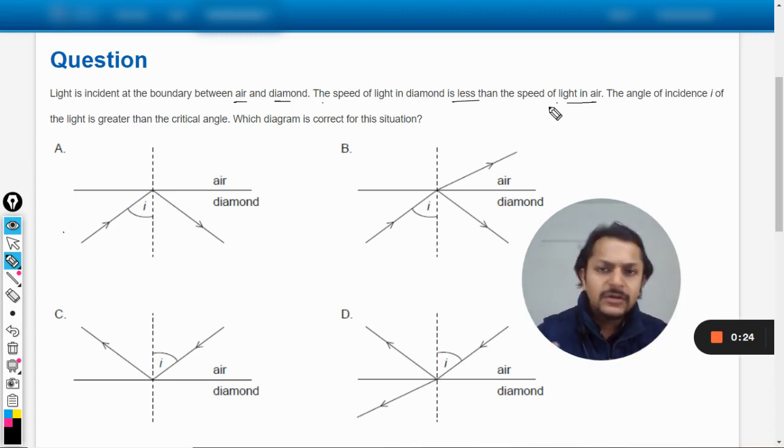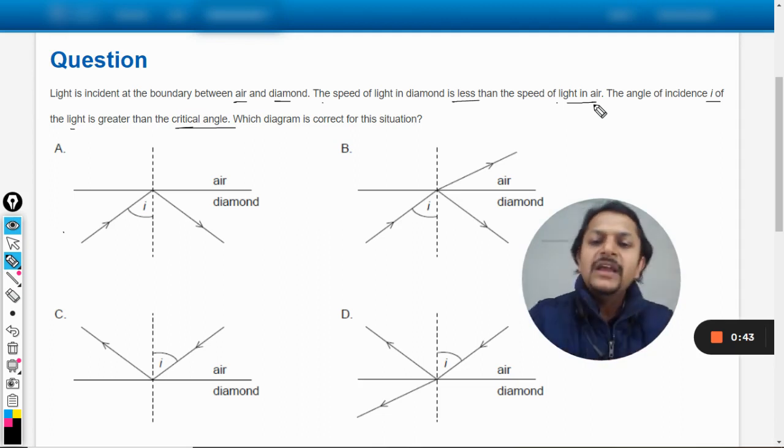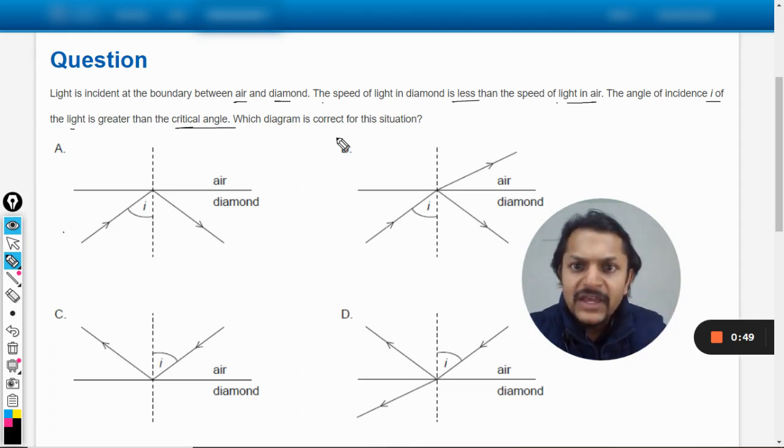The angle of incident I of the light is greater than the critical angle. Okay, so it's not given whether light is coming from the diamond to air or air to the diamond. That is not given, we have to see it from the options. And it is given that the incident angle is bigger than the critical angle. Which diagram is correct for this situation?